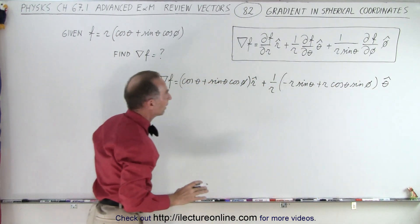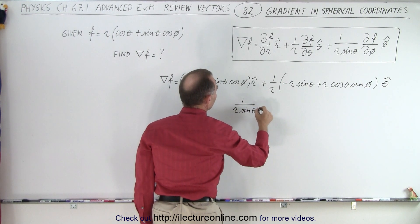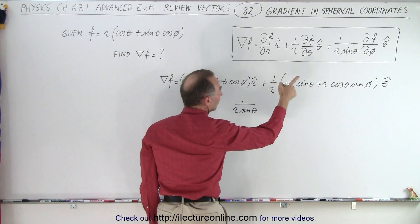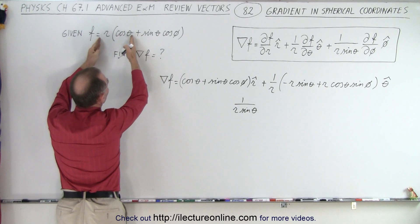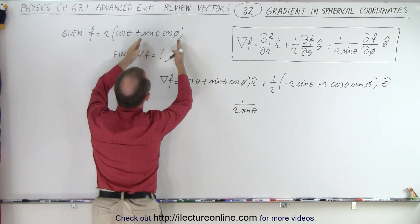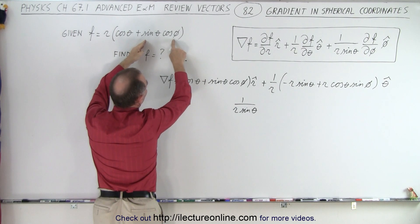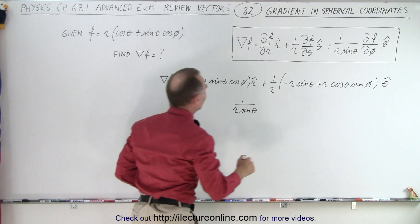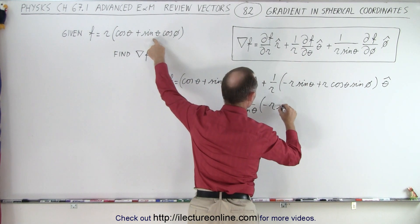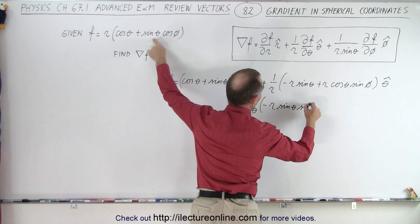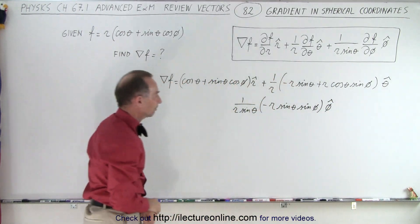Now we have one component left: 1 over r times sine of theta times the partial derivative of the function with respect to phi. Notice that r times cosine of theta is just a constant in terms of phi, so that drops out. Cosine of phi is the variable, and the derivative of cosine is negative sine, giving us negative r times sine of theta sine of phi, in the phi direction.